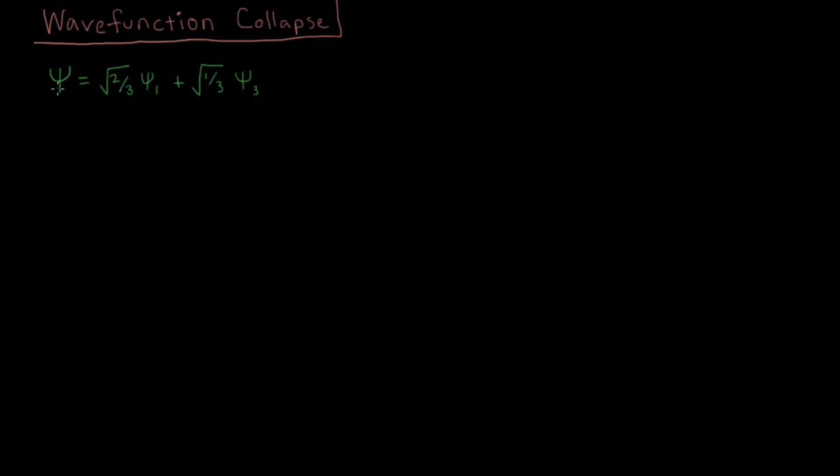Let's now talk about what happens in repeated measurements when we have a wave function which is a superposition of multiple eigenfunctions. So let's say we have this wave function here: it's square root of two-thirds psi 1, let's pretend this is the first eigenfunction of the particle in a box, and plus square root of one-third psi 3, let's pretend that's the third eigenfunction of the particle in a box.